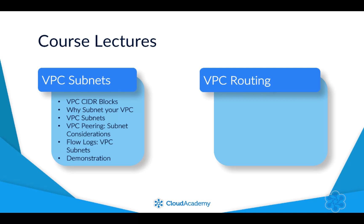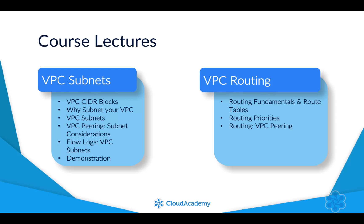Following those lectures covering subnets, I will then look into AWS routing. Here I'll cover routing fundamentals and route tables, introducing AWS routing and its routing tables by breaking down all the components within it. Next, we'll look at routing priorities and how they are defined for overlapping routes within the same route table. Then we'll look at routing configurations starting with VPC peering, covering the different routing configs for multiple VPC peering scenarios.